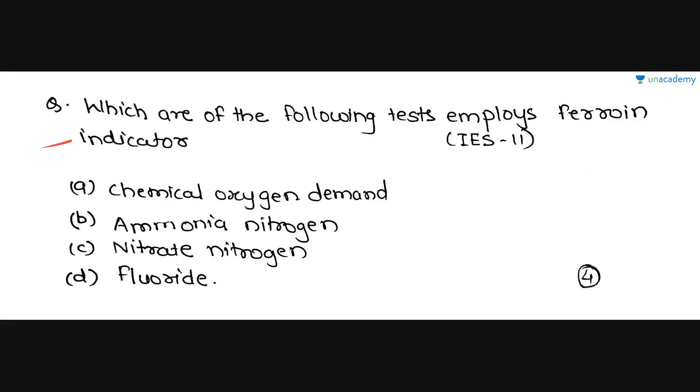Next question is, which of the following tests employs ferrine indicator? Option A is chemical oxygen demand. Option B is ammonia nitrogen. C is nitrate nitrogen. And D is fluoride. This question was asked in IES 2011. Ferrine indicator is used in chemical oxygen demand. That is, option A is the correct option for this question. You should know all the test procedures, as I said. This type of questions can be asked in competitive exams.